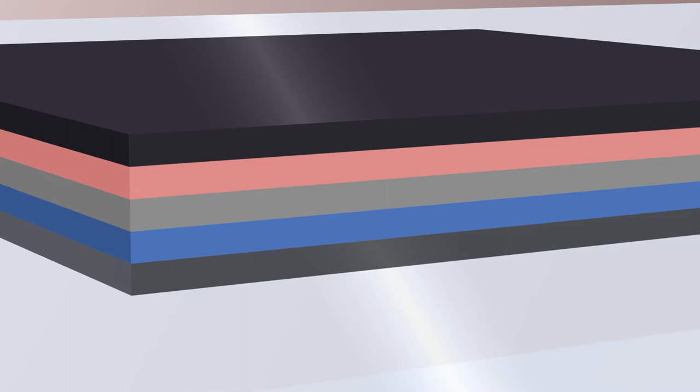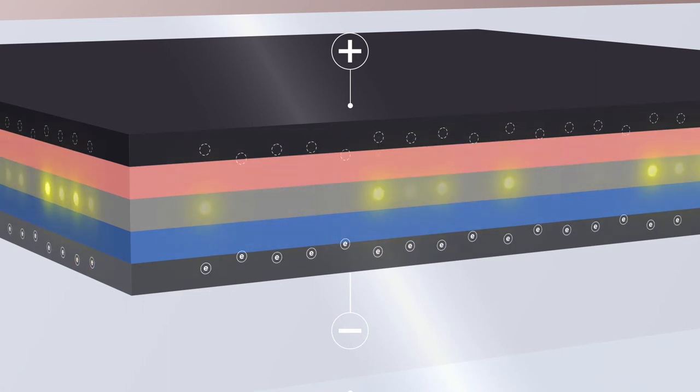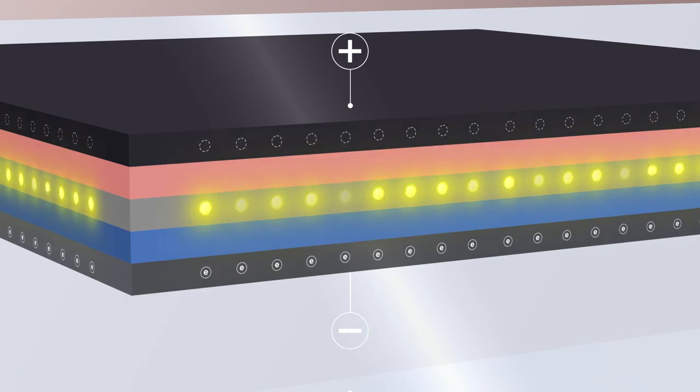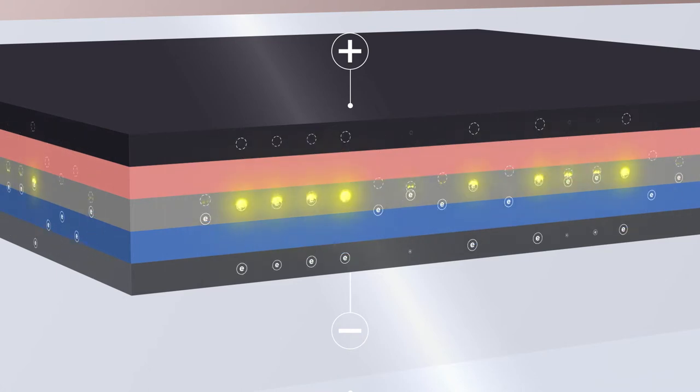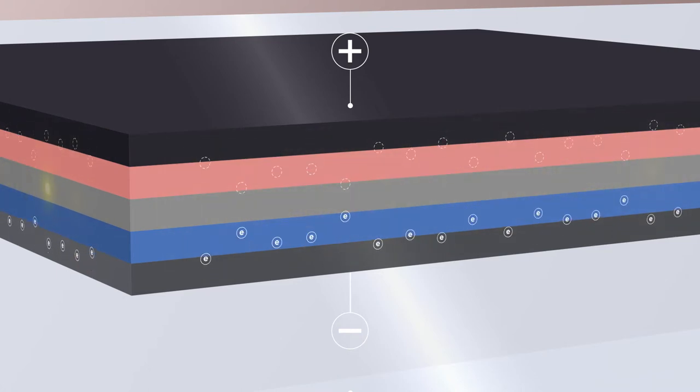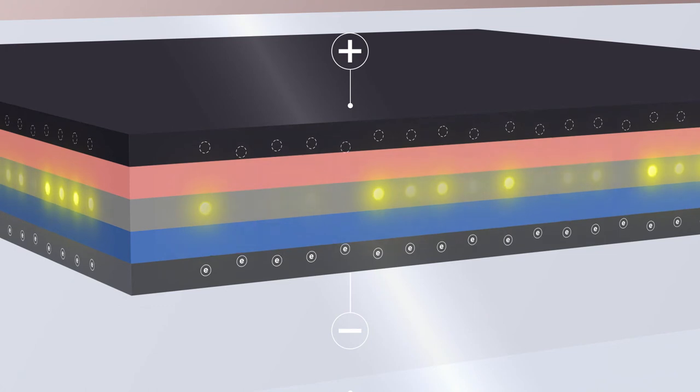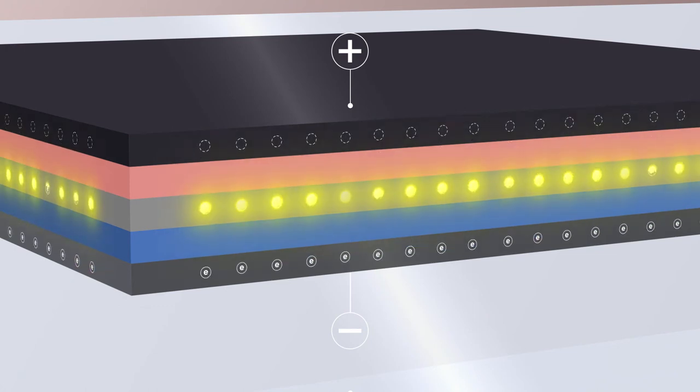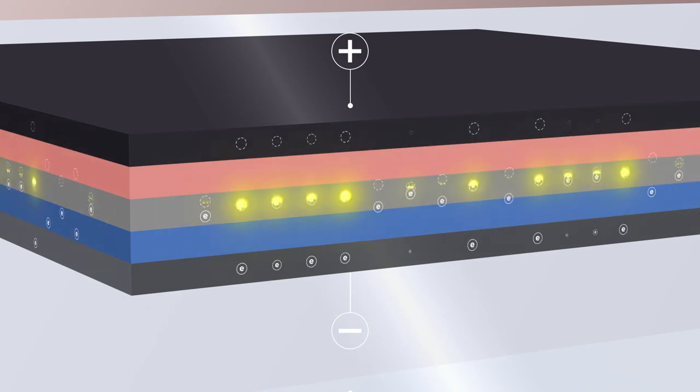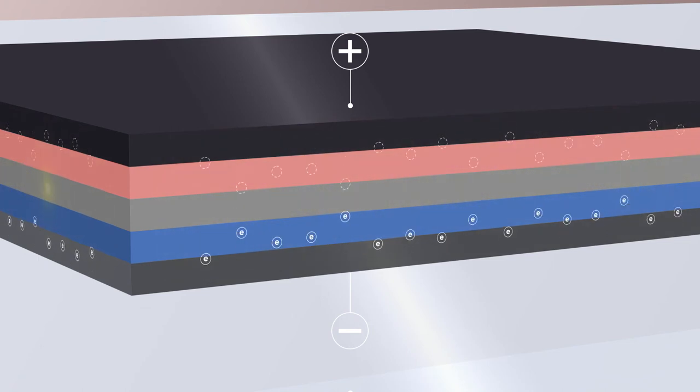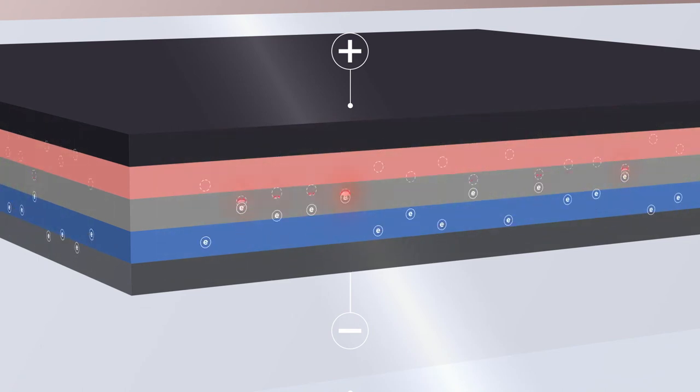If an electric current is now applied, electrons flow in from the negative electrode and travel through the semiconductor to the centre. From the positive electrode, so-called holes, that is, gaps where electrons are missing, also migrate to the centre. In the middle layer, the electrons and electron holes combine. In doing so, they emit energy in the form of light, and in a different colour depending on the semiconductor material.